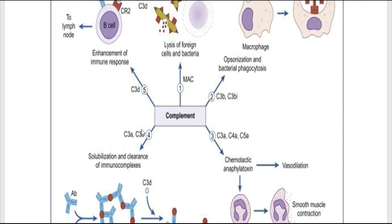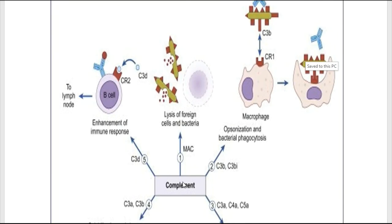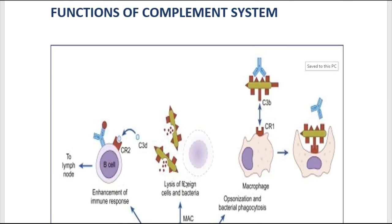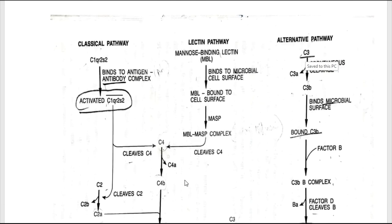For immune clearance: the complement system removes immune complexes from the circulation and deposits them in the spleen and liver, thus acting in an anti-inflammatory function. Complement proteins promote solubilization of these complexes and their clearance by phagocytes. These are the major functions of the complement system.